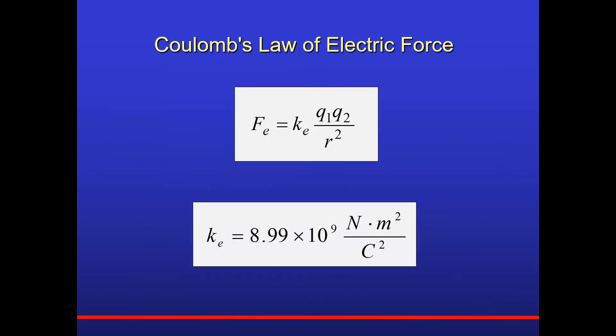This equation is called Coulomb's law electric force. Capital F stands for force, the subscript E for electric. The electric force is equal to k sub E, that's a constant, times q1 times q2 divided by r squared. The constant k sub E, also called Coulomb's constant, is shown there below, 8.99 times 10 to 9.